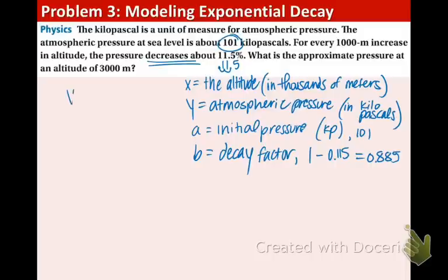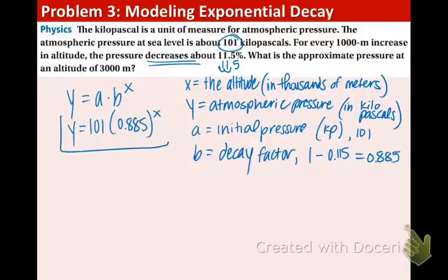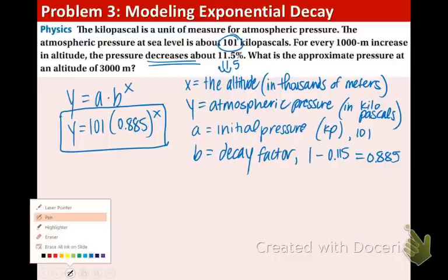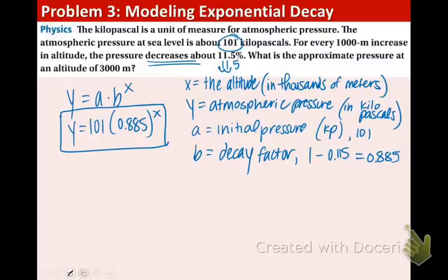Now we're ready to plug all this stuff in. y equals a times b to the x. y equals a is 101, and b is 0.885 to the x. That is our basic decay function. And now it says, what is the approximate pressure at an altitude of 3,000 meters? So we're going to take that 3,000 meters.